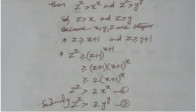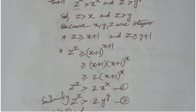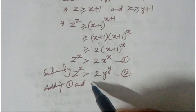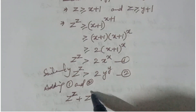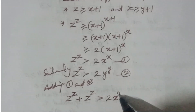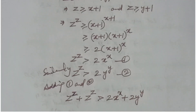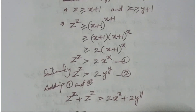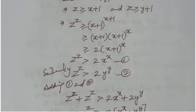From inequalities 1 and 2, adding them together: z^z plus z^z is greater than 2 times x^x plus 2 times y^y. So 2·z^z is greater than 2 times (x^x plus y^y).